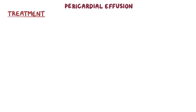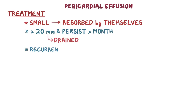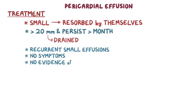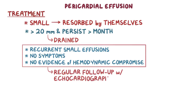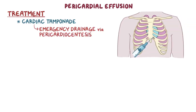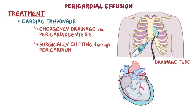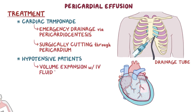In terms of treatment, some pericardial effusions are small and naturally get resorbed by themselves over time. Pericardial effusions larger than 20 millimeters and persisting for more than a month may be drained. In individuals with recurrent small pericardial effusions who don't have symptoms and don't have evidence for hemodynamic compromise, regular follow-up with echocardiography is recommended. Any individuals that develop cardiac tamponade require emergency pericardial drainage by pericardiocentesis — a needle is inserted laterally through the fifth intercostal space into the pericardial space, and fluid is aspirated with ultrasound guidance. A drainage tube is often left in place if reaccumulation of fluid is likely. In some cases, drainage might require surgically cutting through the pericardium to create a pericardial window so the fluid can leak out. In hypotensive patients, volume expansion with intravenous fluids and blood products may also be needed.